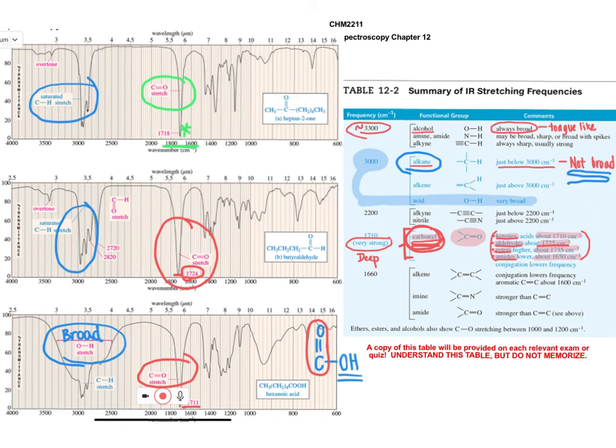But in general, what we are going to see is that the most diagnostic signals that we can use in IR are going to be for alcohols and carboxylic acids with the hydroxy group showing up very broadly, and the carbonyl groups showing up at around 1700.